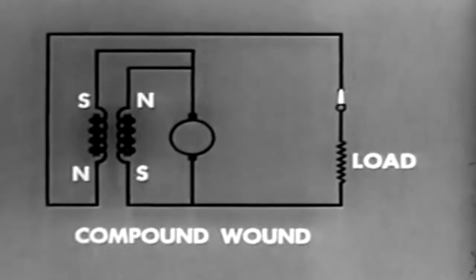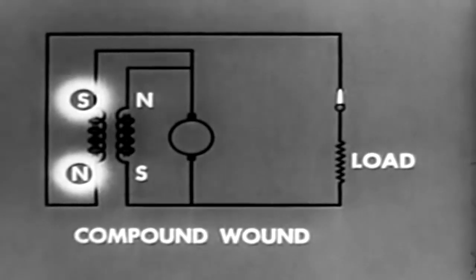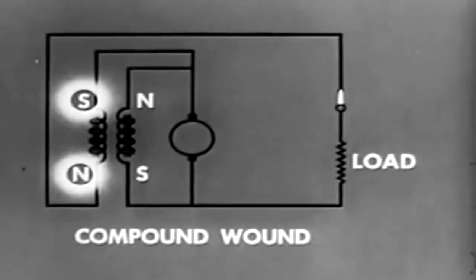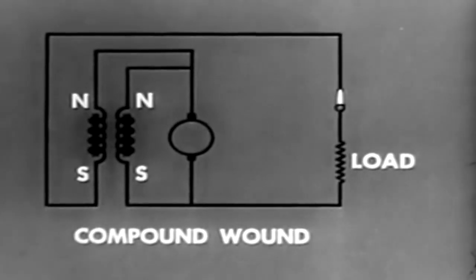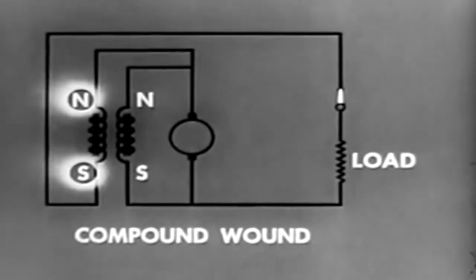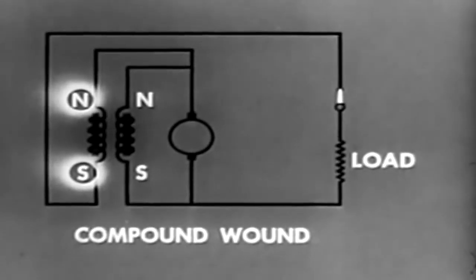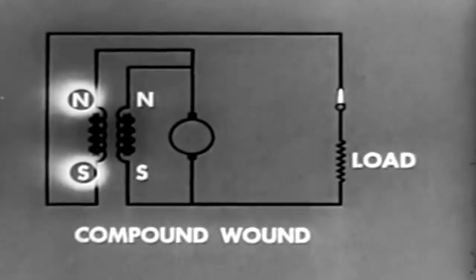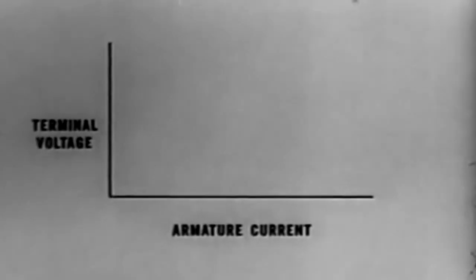When windings are arranged so that magnetic fields oppose each other, it becomes, in effect, a series generator — used only where constant current is the prime requirement, such as in arc welding. By changing the magnetic polarity of one of the fields, the field windings aid one another, and this compound-wound generator has good voltage and fair current regulation. A graphic representation of generator output characteristics shows terminal voltage plotted vertically and armature current horizontally.